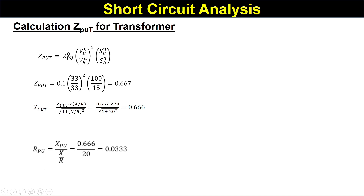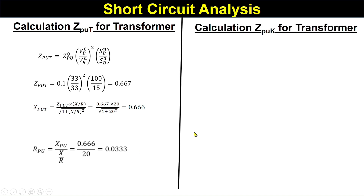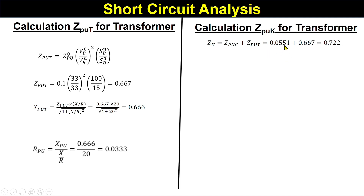R per unit of the transformer equals X per unit divided by the X/R ratio: 0.055 divided by 14 equals approximately 0.0039. Now we calculate Z_k, the total per unit impedance up to the fault point. We have considered the fault on the 11 kV bus (bus 2). Z_k equals the per unit impedance of the grid plus the per unit impedance of the transformer: 0.055 + 0.67 = 0.772 per unit.